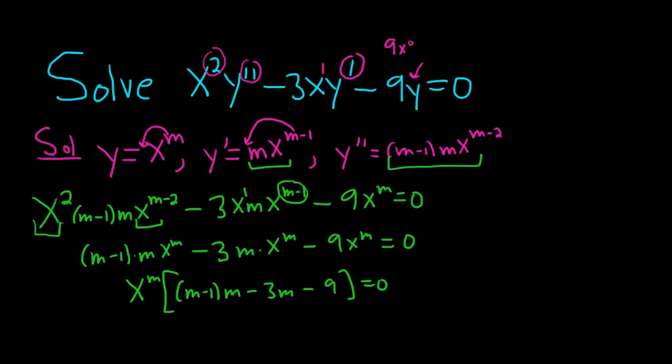Now you can divide both sides by x to the m. So if you divide by x to the m, these cancel. And then 0 over x to the m is 0.